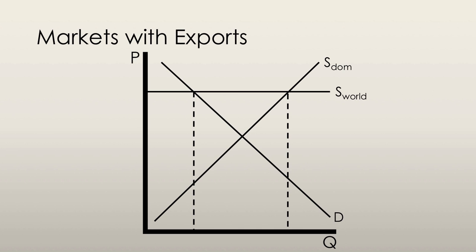Again, there is a disconnect between the domestic quantity supplied and the domestic quantity demanded. This supply surplus is exported to foreign markets. The purple arrow shows us how much of the good is exported.